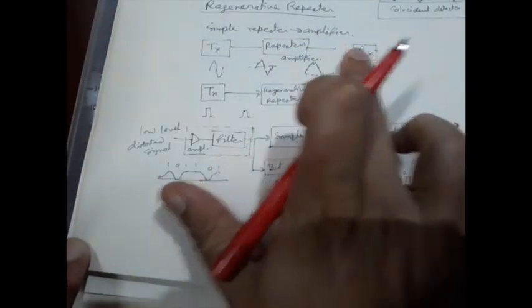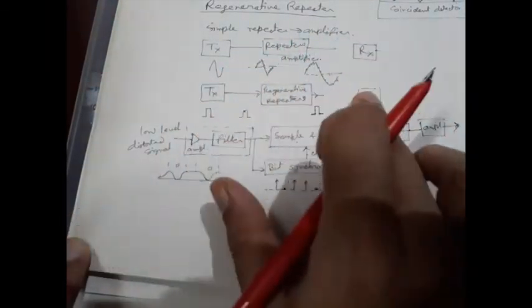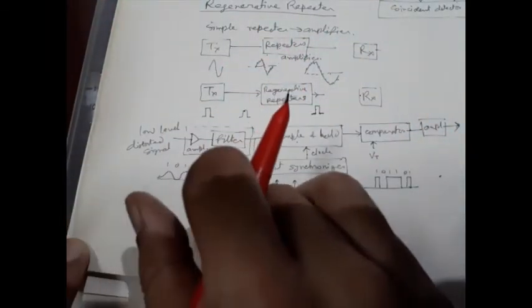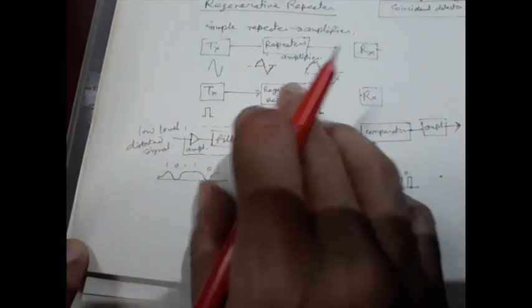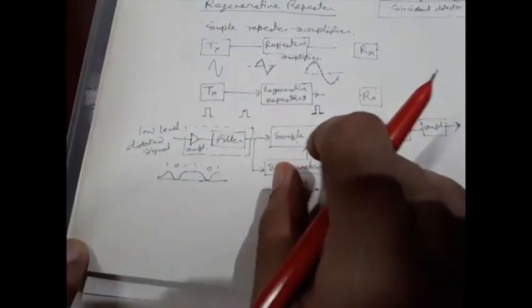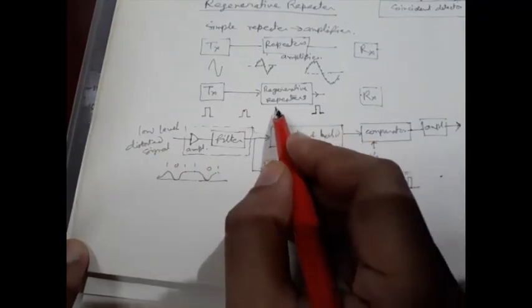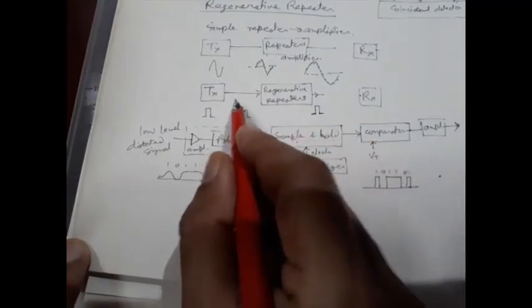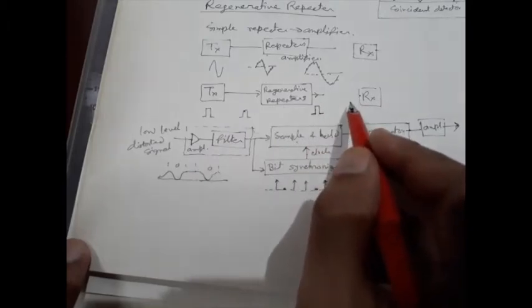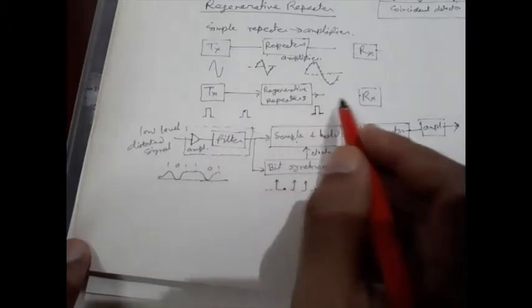If we have n number of regenerative repeaters within this path, and assume that all the repeaters are identical in nature, we can use binomial distribution to calculate the effective bit error rate or bit error probability.